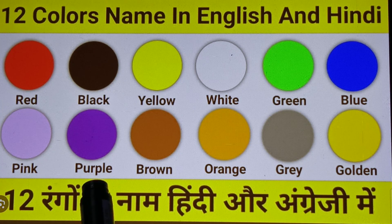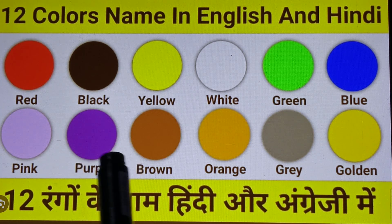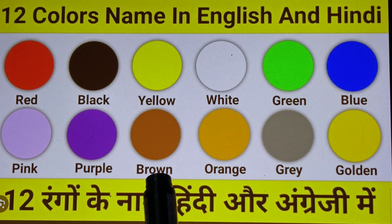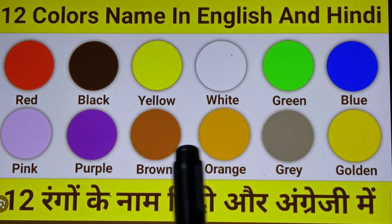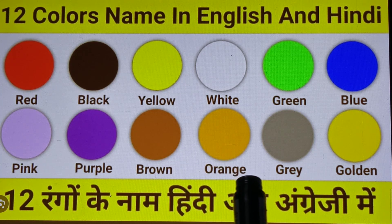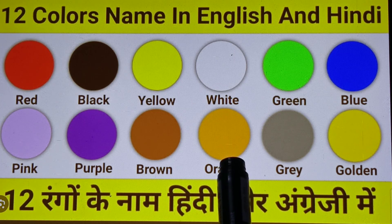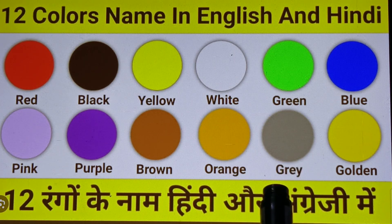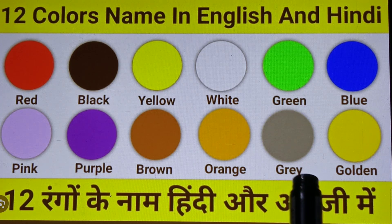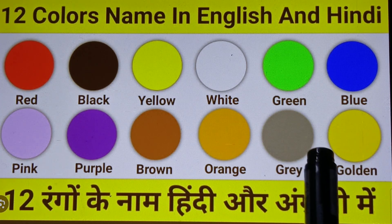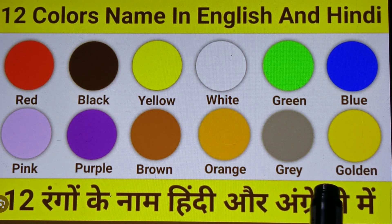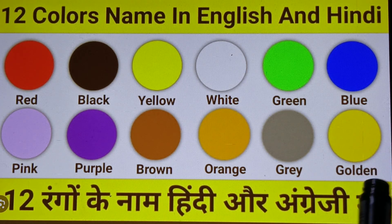Purple means Bagani. Next one is Brown, B-R-O-W-N — Brown means Chocolatey. Next one is Orange, O-R-A-N-G-E — Orange means Santra, Orange means Narangi. Next one is Gray, G-R-E-Y — Gray means Bhoora. Last one is Golden, G-O-L-D-E-N — Golden means Sunhara.